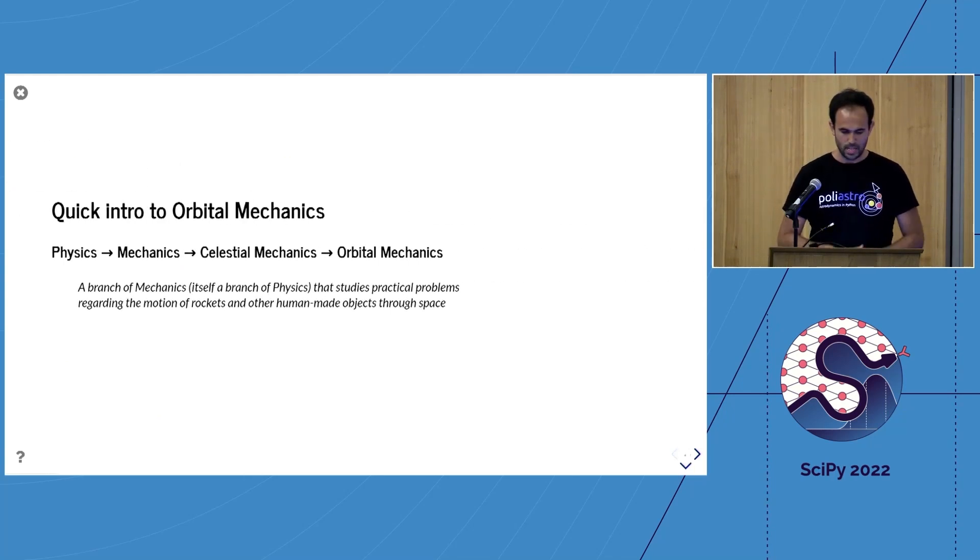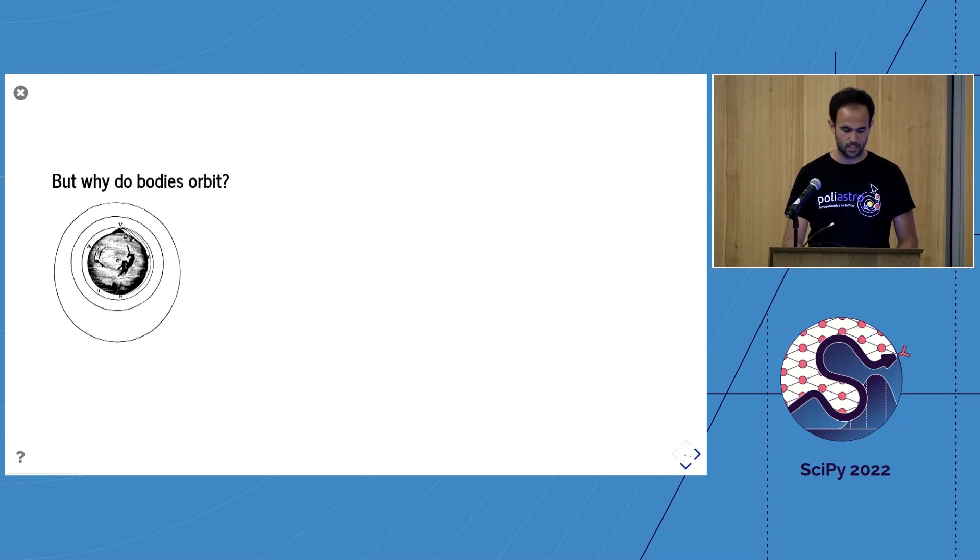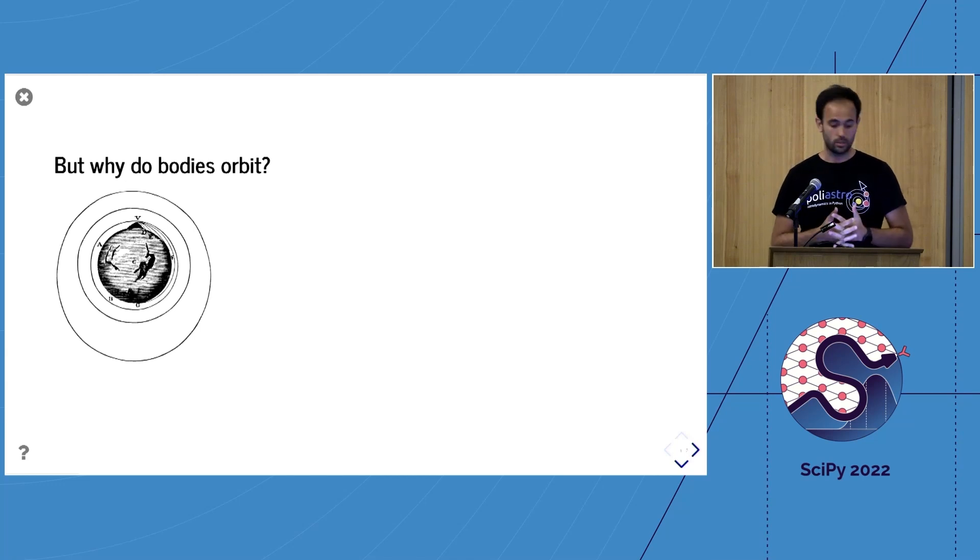A real quick intro to orbital mechanics: it's a branch of mechanics that studies practical problems regarding the motion of artificial objects. It mostly focuses on satellites, spacecraft, and the motion of rockets. A concept that comes up all the time is the orbit—the trajectories that objects describe around attractors. This is a depiction of a mental experiment by Newton. If you have a cannon on top of a mountain shooting a ball, and you keep increasing the power, the ball falls farther and farther away.